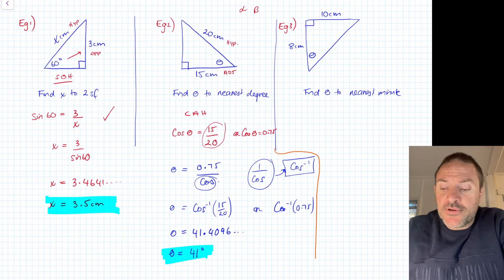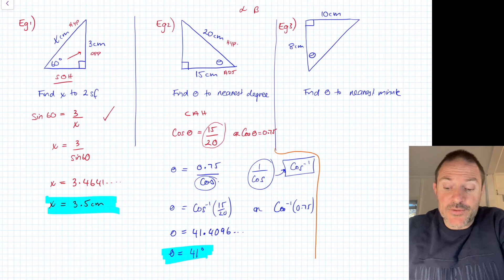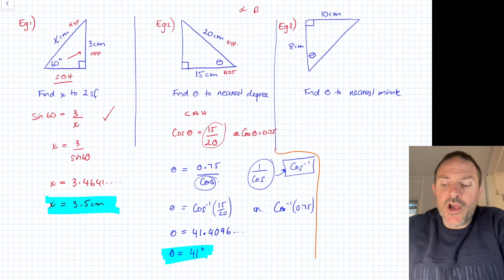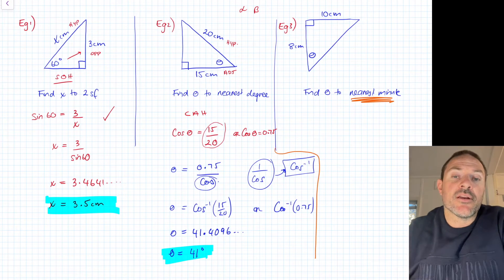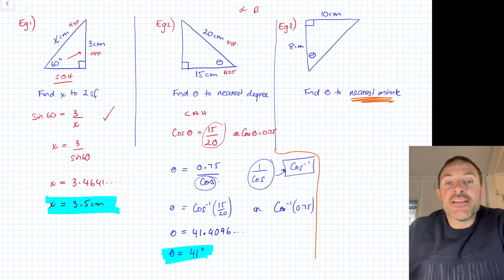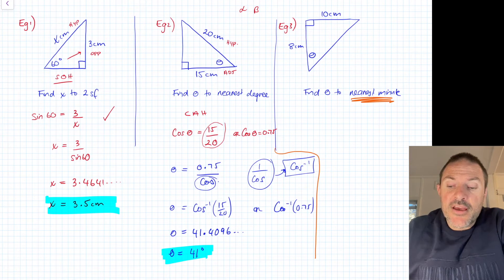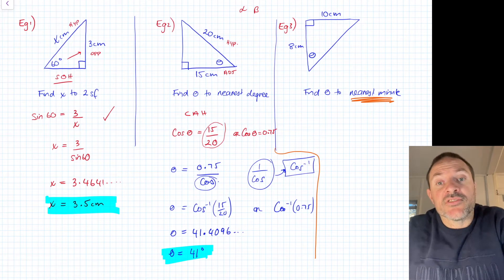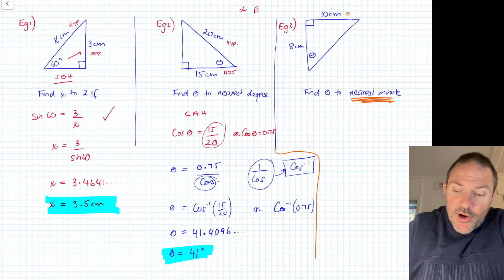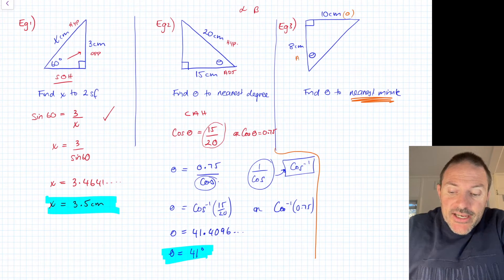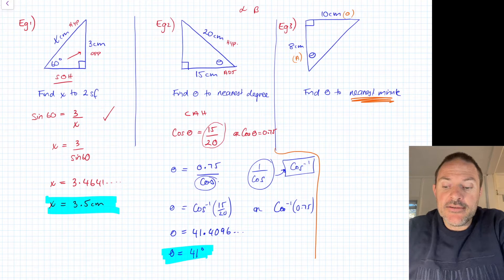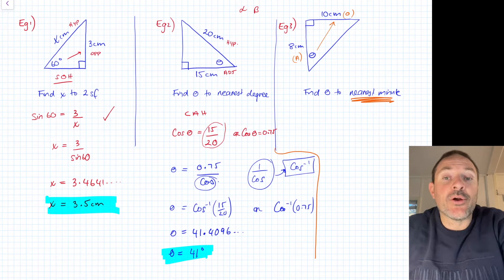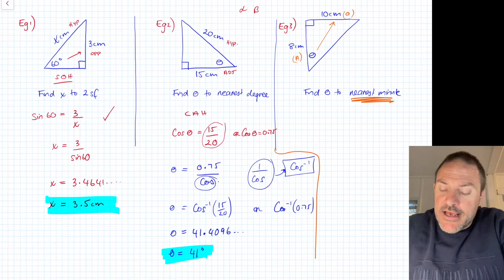Example three, last example. This question is almost the same as question two. The only real difference is I've asked you to the nearest minute, and we'll talk about that when we get to that last part. The same steps absolutely follow. First step, always find the rule that you're using, the ratio: sine, cosine, or tan. In this case, I can see my opposite is the 10, my adjacent is my 8, because opposite is opposite the angle in question, and the adjacent is the side next to my angle in question.